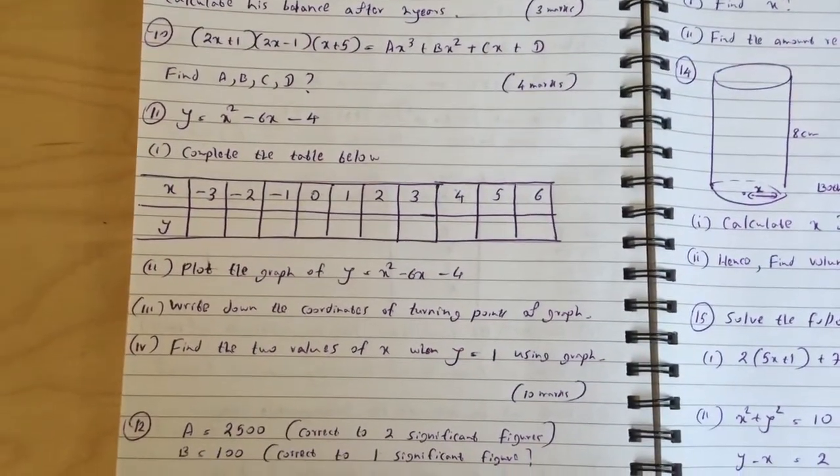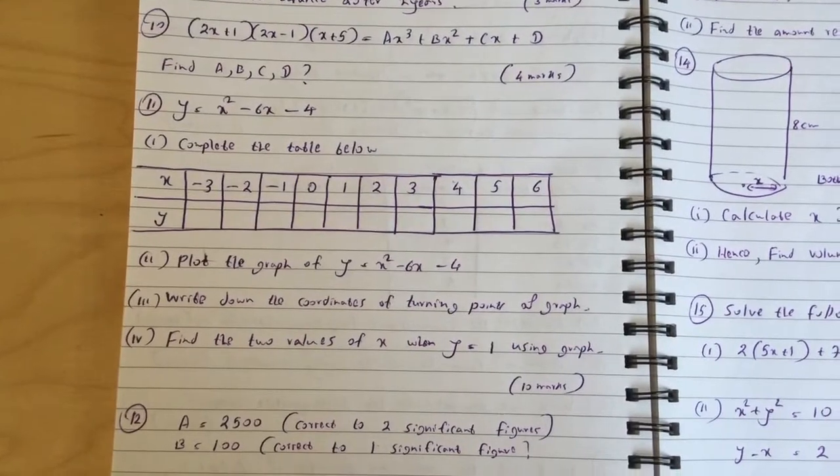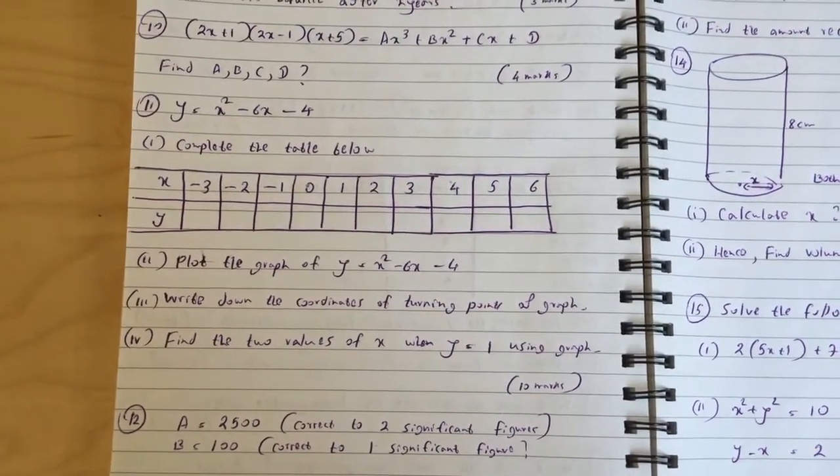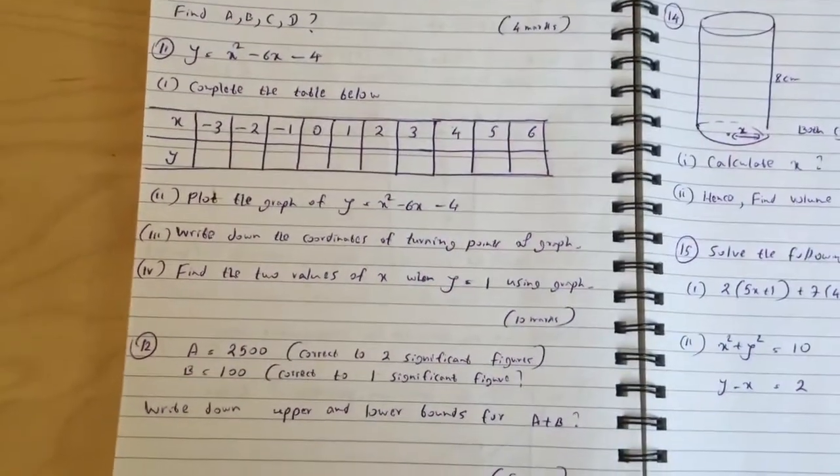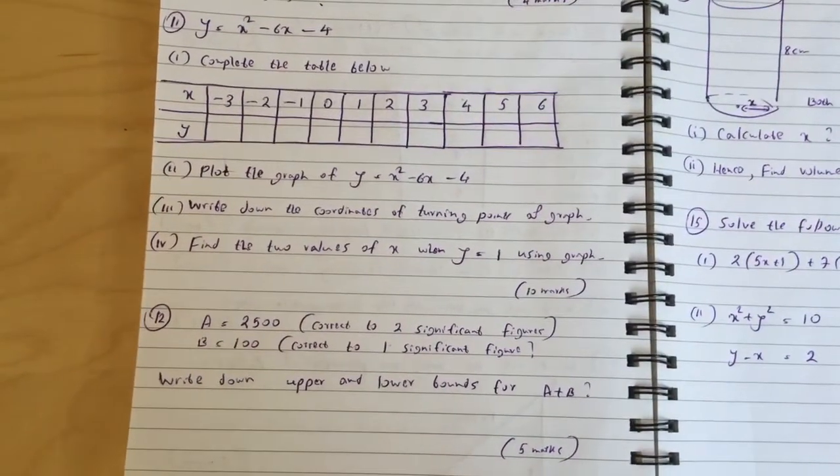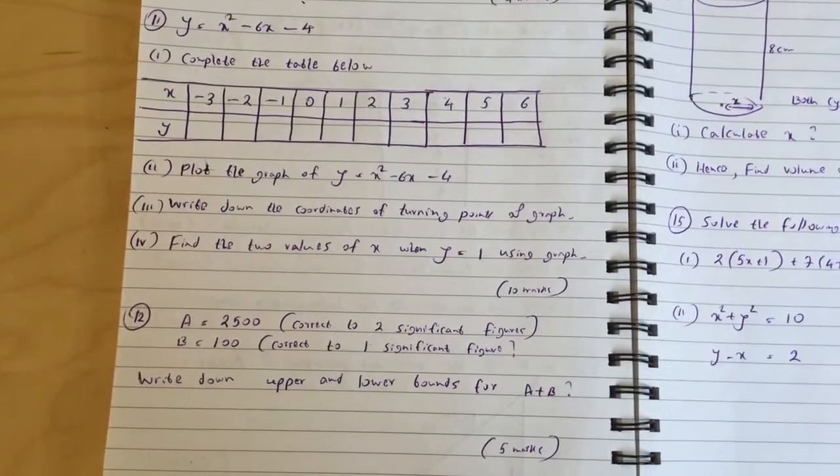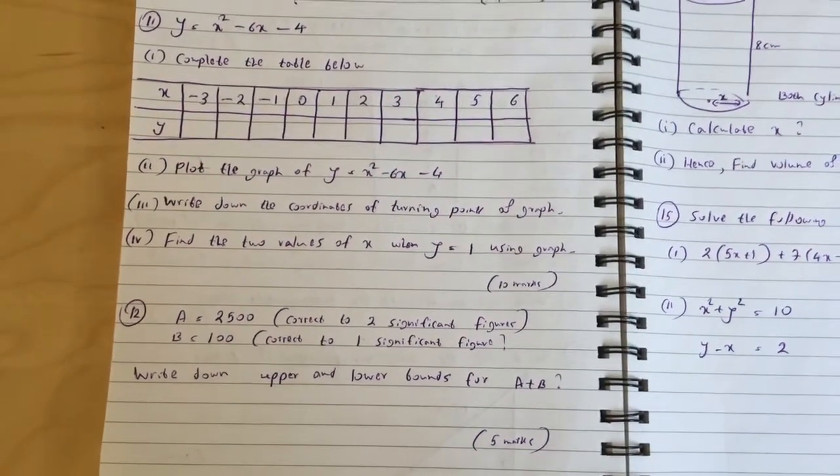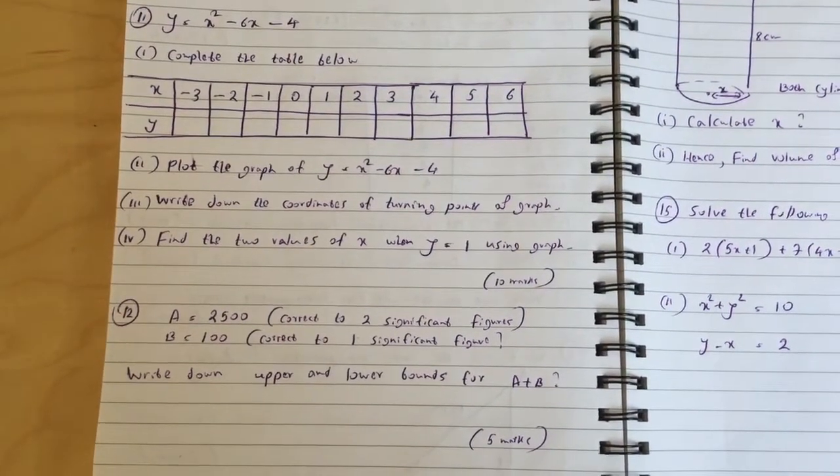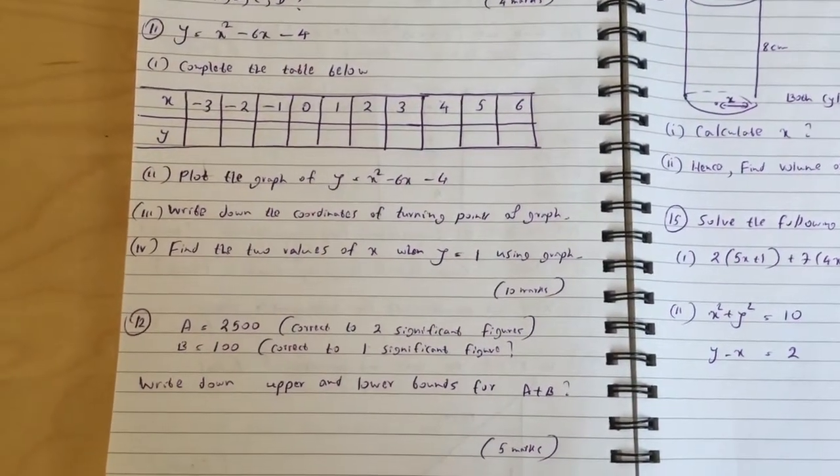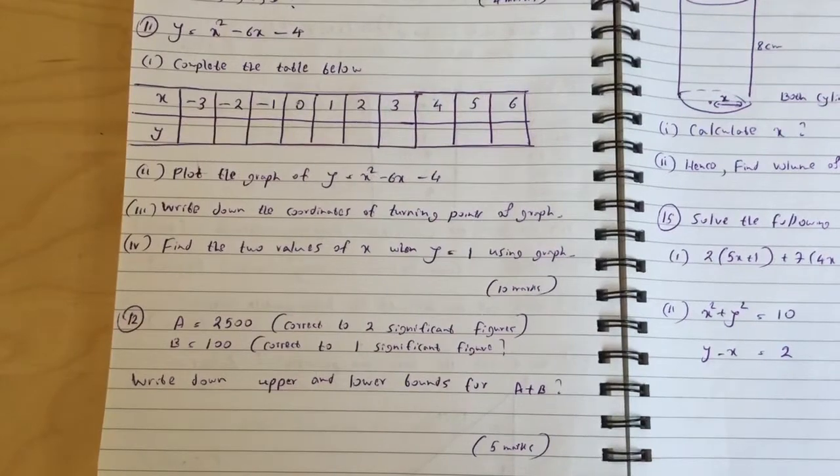Question 11: y equals x squared minus 6x minus 4. Complete the table below with x values from minus 3 to 6. Part 2: Plot the graph of y equals x squared minus 6x minus 4. Write down the coordinates of turning points of graph. Find the two values of x when y equals 1 using graph.